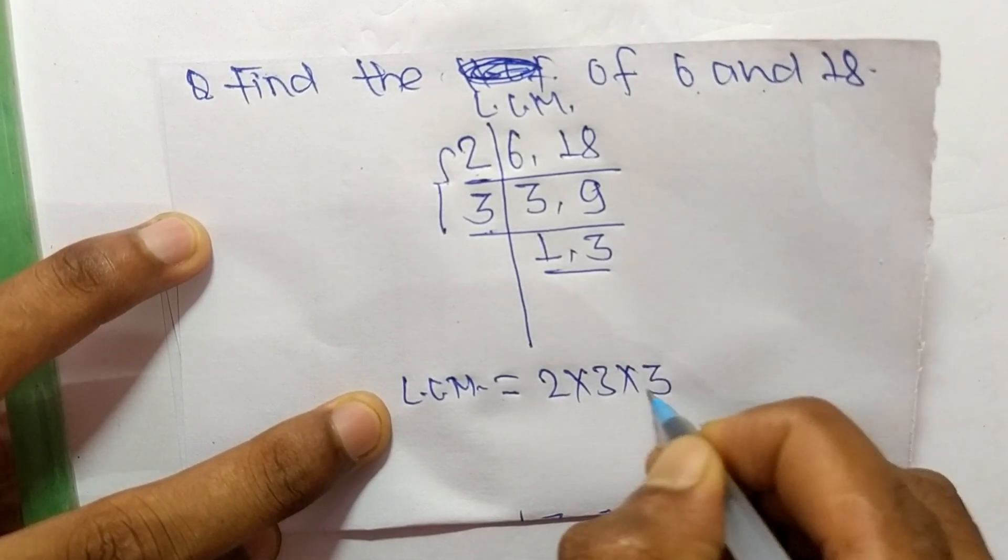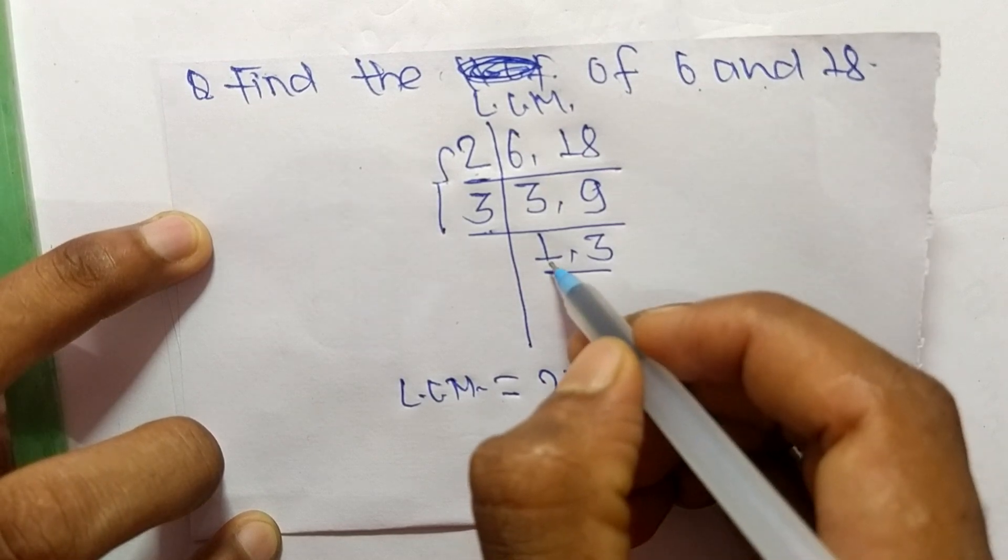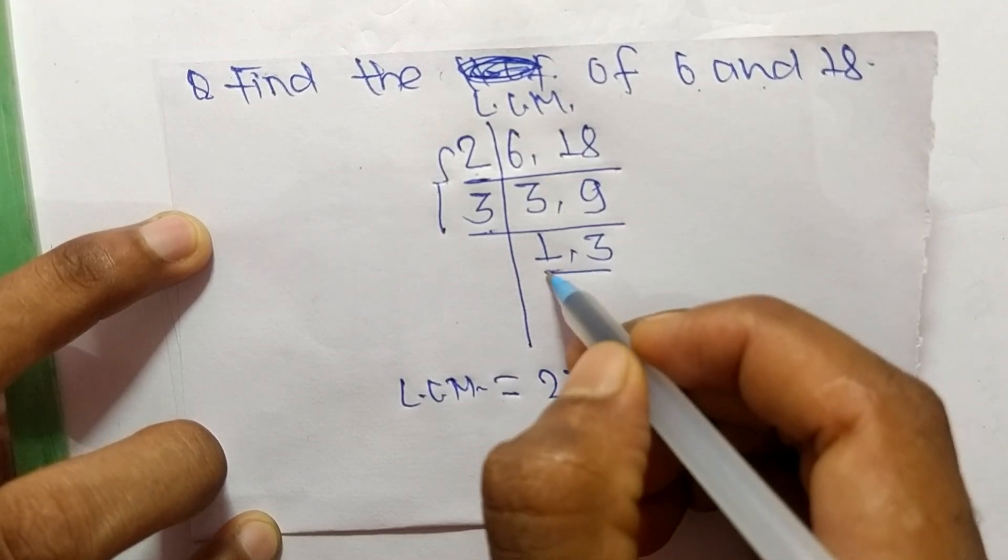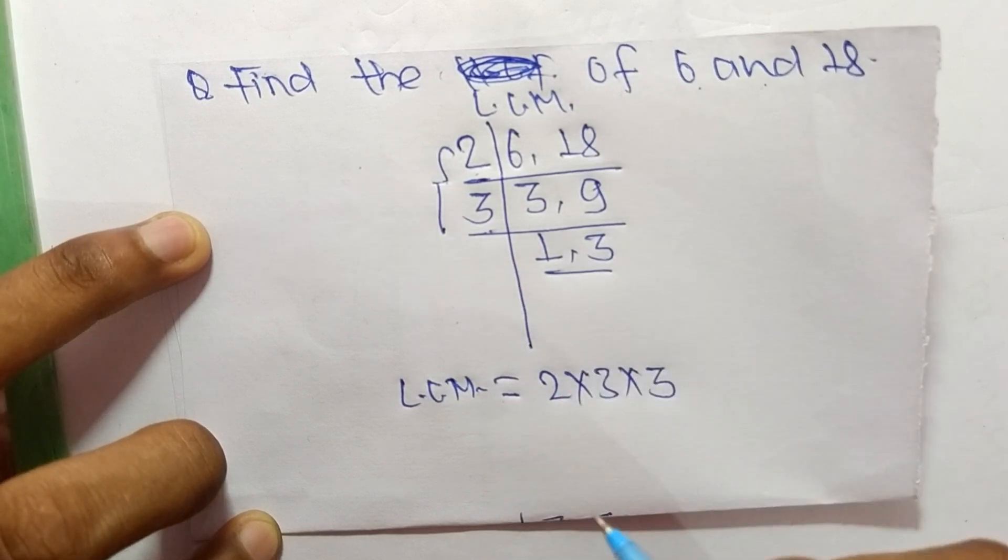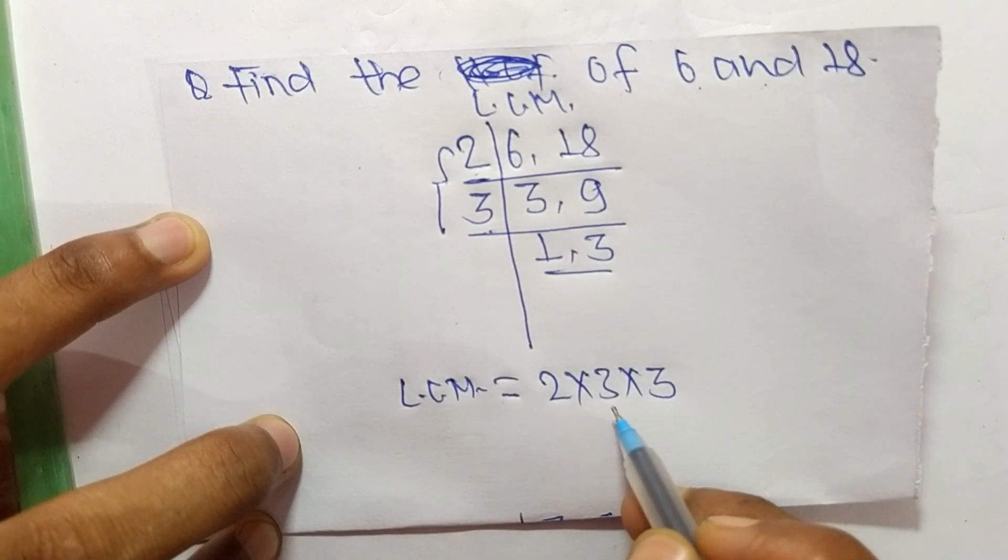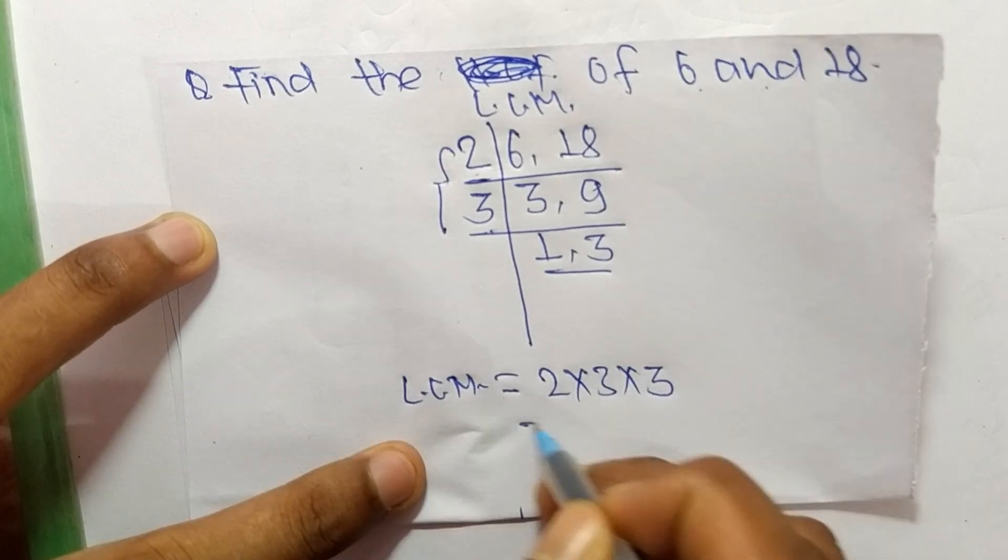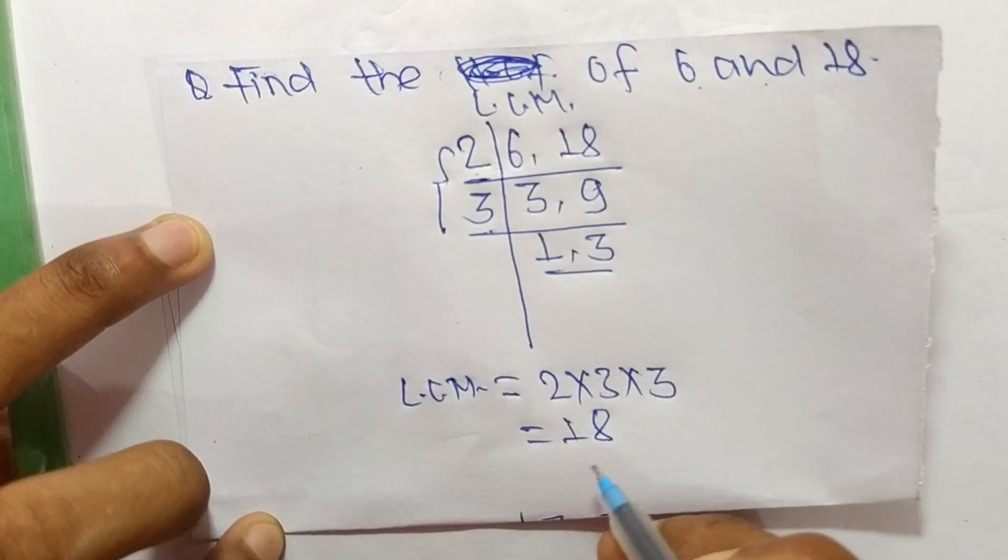So we neglect the 1. It is 2 times 3 which is 6, and 6 times 3 is 18. So 18 is the LCM of 6 and 18.